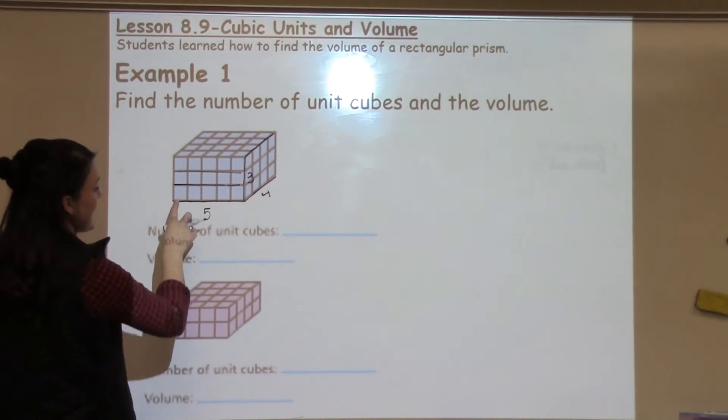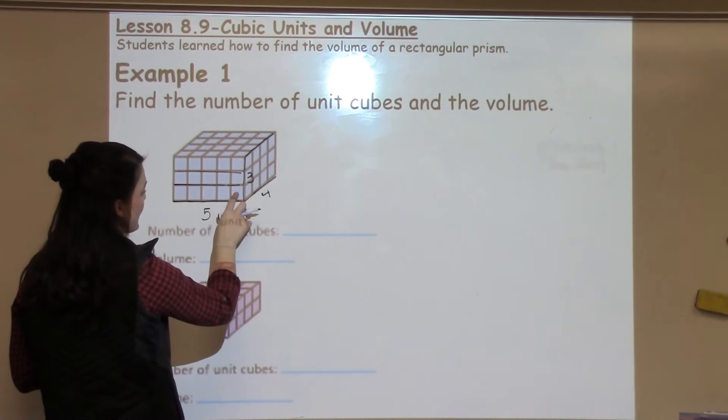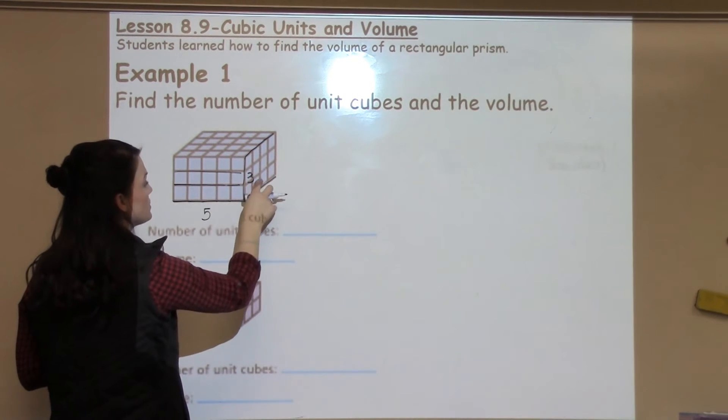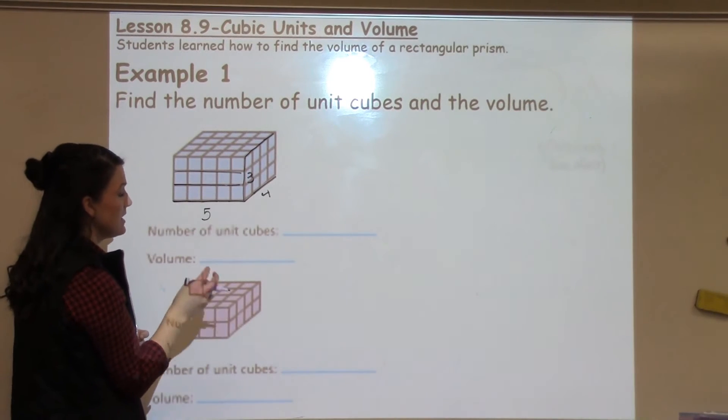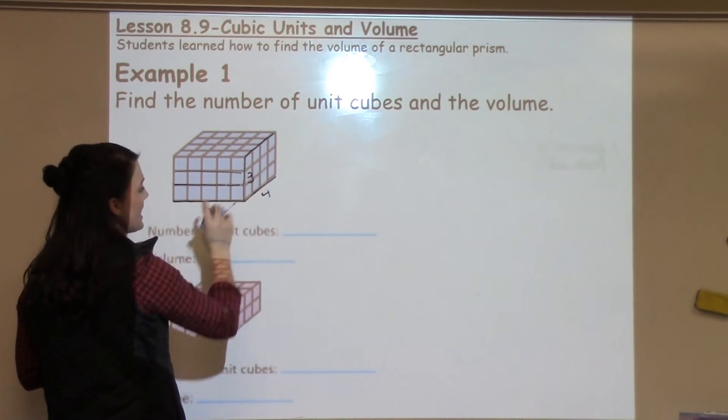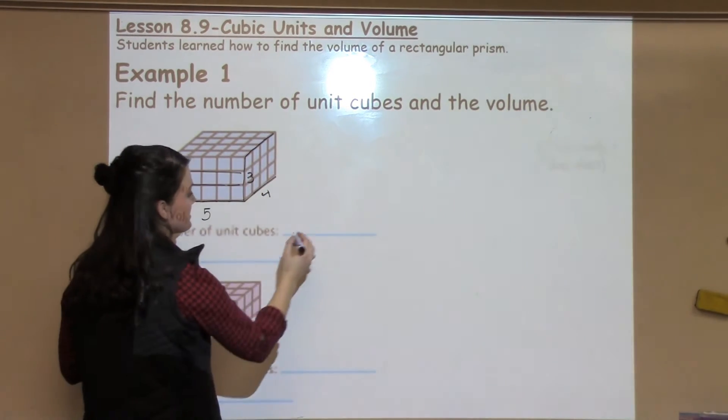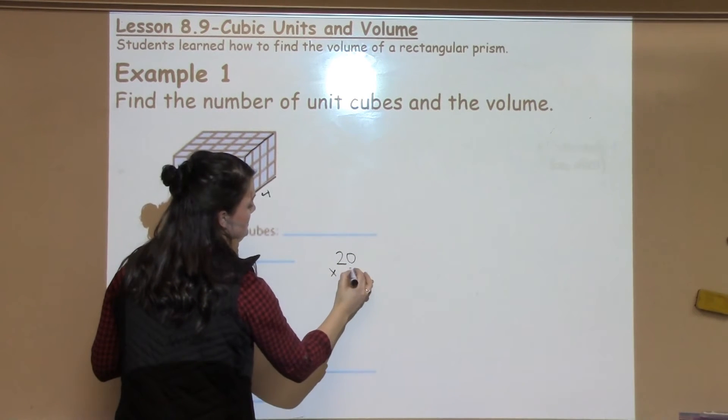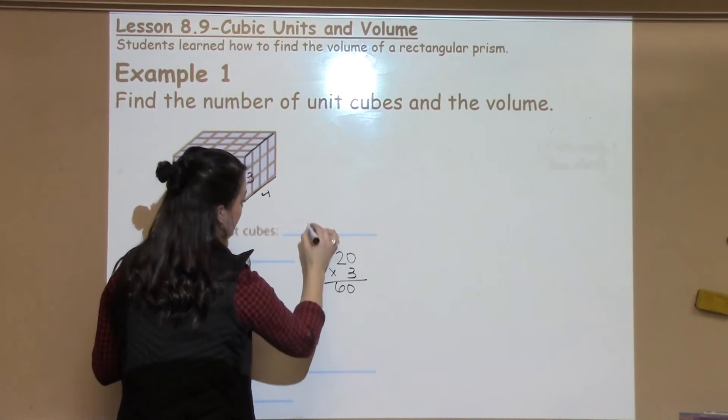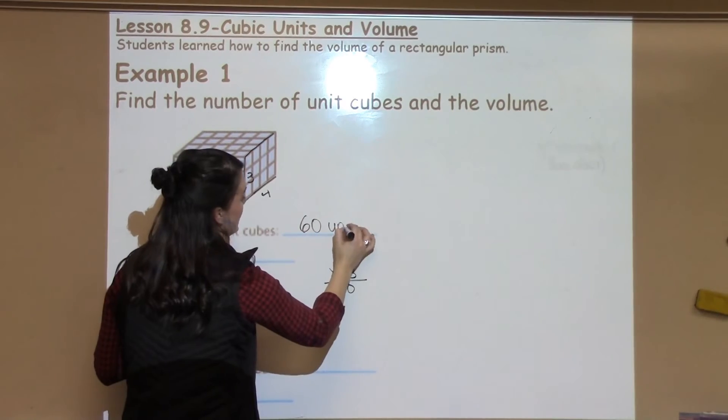So students could count 1, 2, 3, 4, 5 times 1, 2, 3, 4 to know that they've got 20 and then count and multiply that by 3 to find 20 times 3 for a final answer of 60 unit cubes.